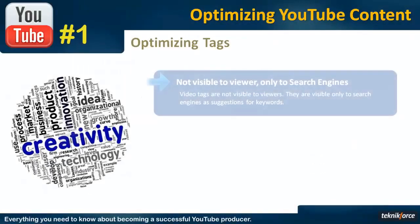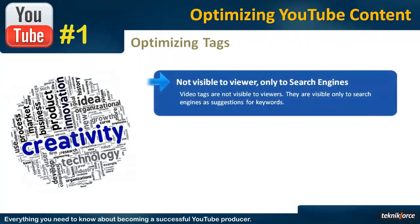Tags are the keywords which you want to be found for. Through tags, you tell YouTube that they should be returning your videos when the viewers type in those keywords in the search bar. But the tags are only for YouTube and the search engines — they are not visible to the viewer. Only search engines like Google or Bing, or YouTube itself, can see the tags. Search engines consider the tags as suggestions for ranking.